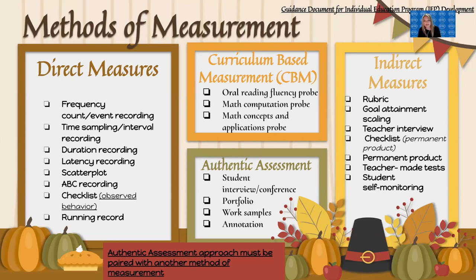A checklist can be a direct measure or an indirect measure. The difference is: a direct measure is when you are actively observing the behavior being done — you can watch it happen, you're there for it. For example, a direct measure could look at duration, latency, and things like that. When we say behavior, we're not just talking about off-task behavior — we're talking about reading, completing math problems, fluency, or following correct punctuation. That is also technically behavior.